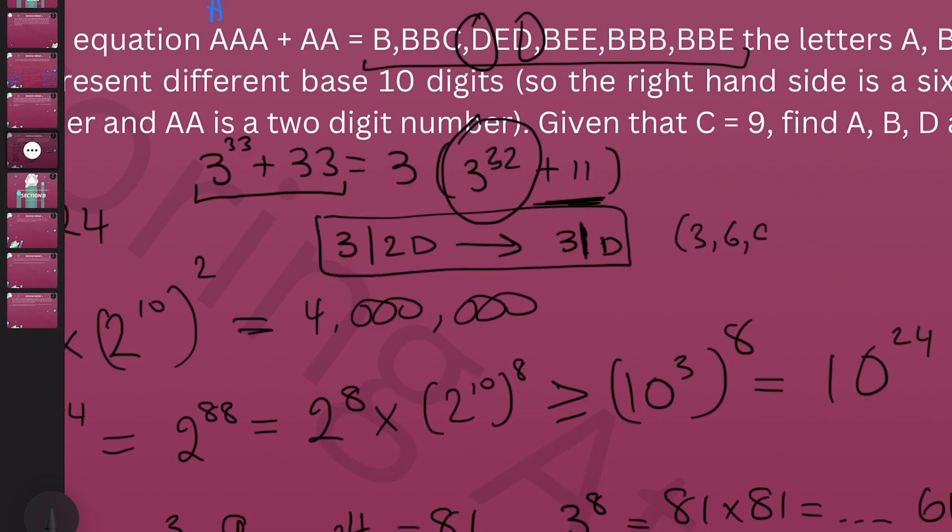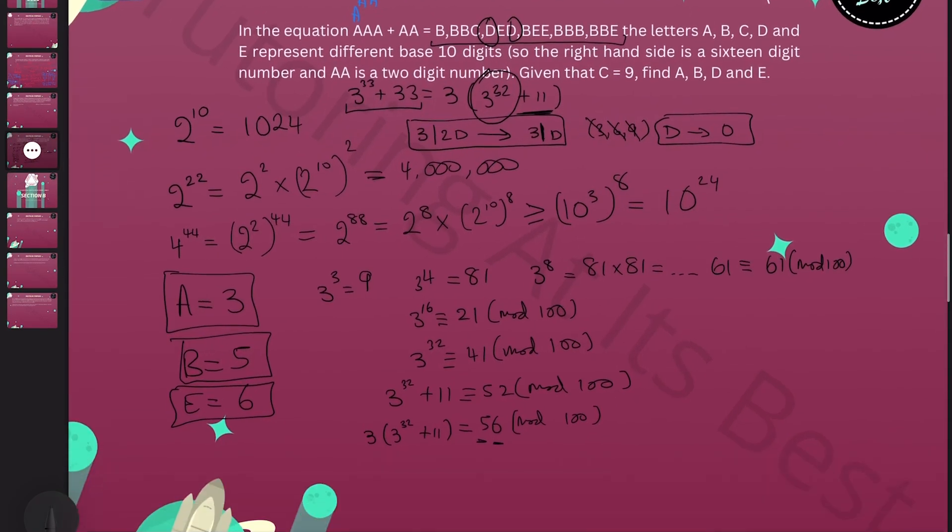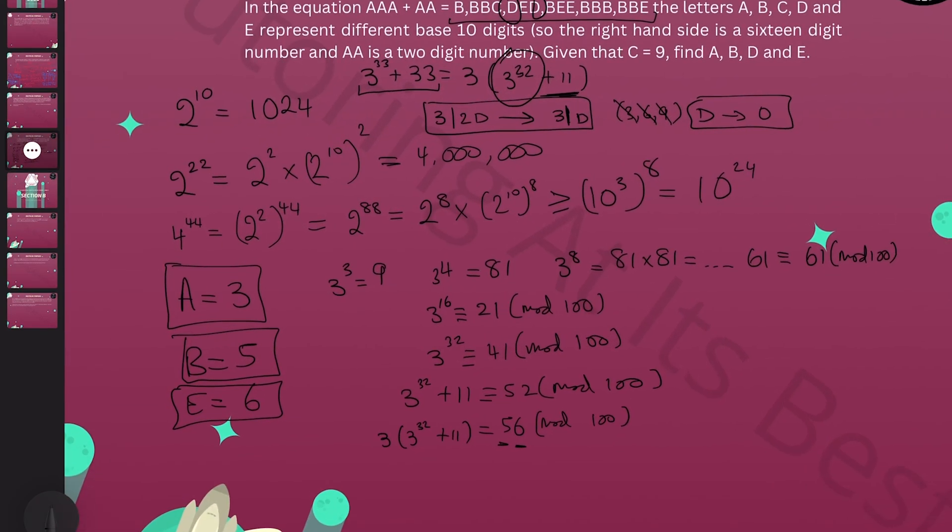So we can simply think about the possible options divisible by 3, which can be 3, 6, or 9. Remember it can't be 3 because A is already 3 and they had to be different digits. It can't be 6 and it can't be 9, and there's only one option left, and that is D being 0. That gives us all four letters where A was 3, B is 5, E is 6, and D is 0.